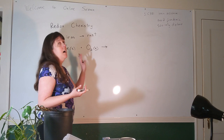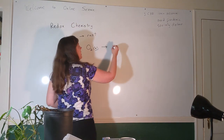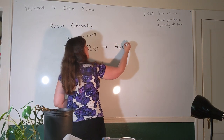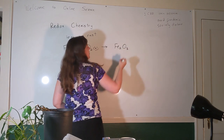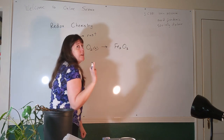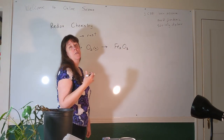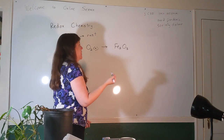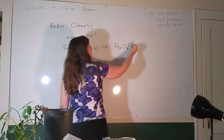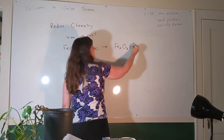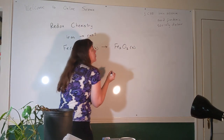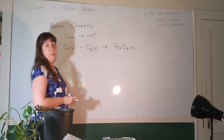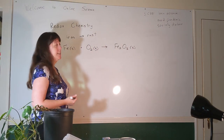Iron 3 oxide is going to have the formula Fe₂O₃. You can use any of the methods we use to find formulas for ionic compounds — the crisscross is probably the simplest. Iron oxide is a solid; rust is a solid. Now, before we do anything else, what should we probably do? Balance the reaction.